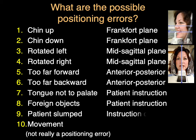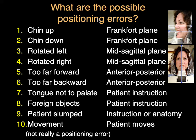The patient could be slumped, and that could be an instruction issue, or maybe we don't have the machine lined up properly, or it could be an anatomical problem. If somebody had severe scoliosis in the cervical region, there may not be a way around this, and this can lead to an accentuated spinal shadow. And finally, movement — that's not really a positioning error, but it's an error on a film, and it's a problem with patient instruction as well. We should tell the patient to close down, keep their tongue to the roof of the mouth, and be very still right before we take a pan.